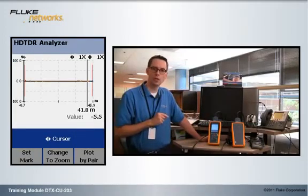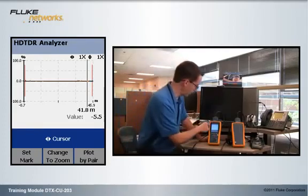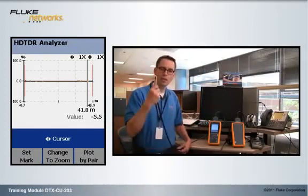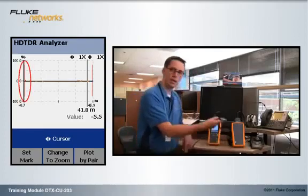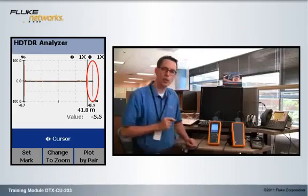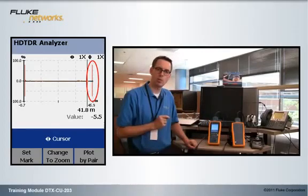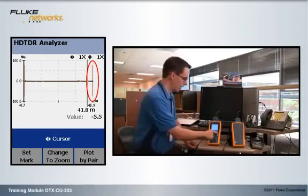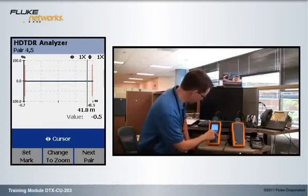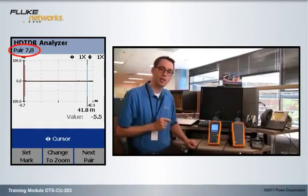Now we're looking at all four pairs on the screen here and just as before we have two vertical red lines indicating our first connection and our last connection. We're only interested in that pair that caused us the problem which is 7-8, so I'm going to hit the F3 key until I see 7-8.